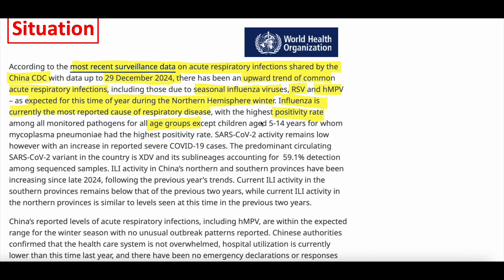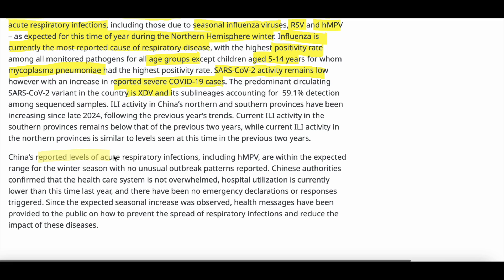Influenza has the highest positivity rate for all age groups except children aged 5 to 14, where mycoplasma pneumonia is higher. COVID activity remains low in China, although there has been an increase in severe cases. The predominant circulating COVID variant is XDV. China's reported levels of acute respiratory infection, including human metapneumovirus, are within the expected range for the winter season, with no unusual outbreak patterns reported. Chinese authorities confirmed the healthcare system is not overwhelmed, and hospital utilization is currently lower than this time last year.